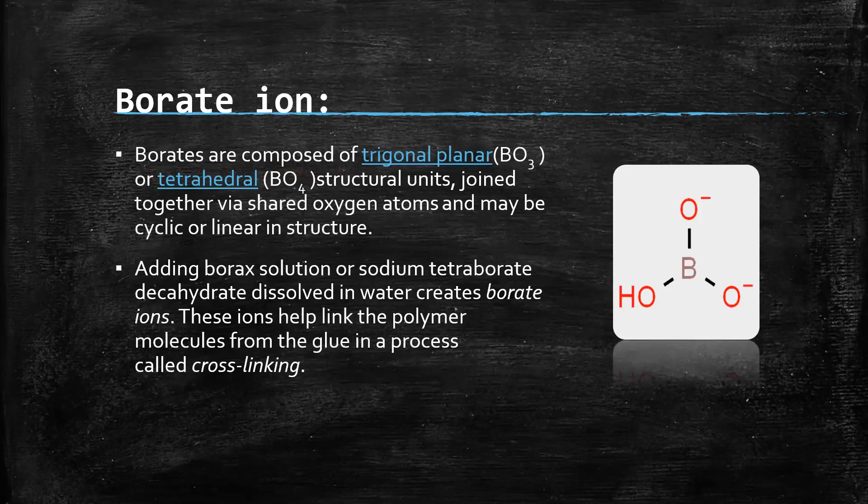The next ingredient used in slime is borate. Borates are composed of trigonal planar or tetrahedral structural units joined together by shared oxygen atoms, and may be cyclic or linear in structure. Adding borate solution — sodium tetraborate — dissolved in water creates borate ions. These ions help link polymer molecules together through a process called cross-linking.